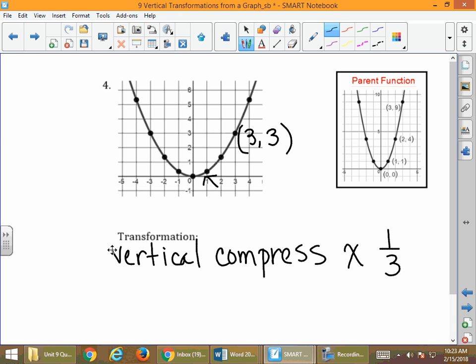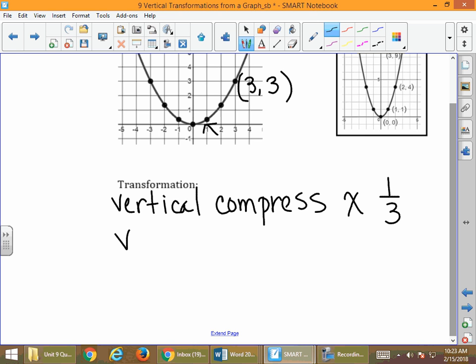But I just want to alert you to the fact that sometimes the way it's written is as vertical compress by 3. So sometimes it's written that way. I prefer the first way, but I want you to recognize that vertical compress by 3 just means that we're going to take our factor and multiply it by 1 third. Compressing usually has a fraction value in it when we're dealing with vertical compressions.